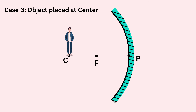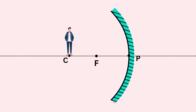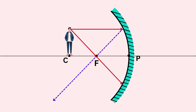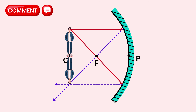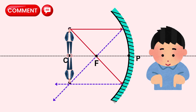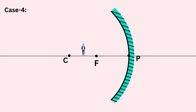Case three: the object is placed exactly at the center of curvature C. We draw a ray parallel to the principal axis — after reflection it passes through focus F. Then a ray through the focus F — after reflection it goes parallel to the principal axis. These two reflected rays meet exactly at point C, where the object is placed. Comment and tell me: is the image real or virtual, inverted or erect, and bigger, smaller, or the same size as the object?